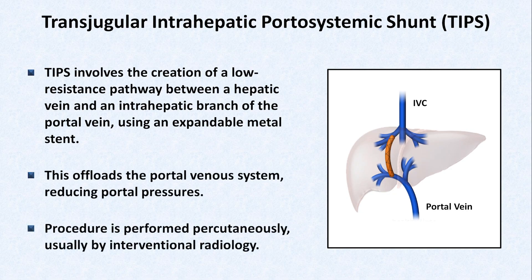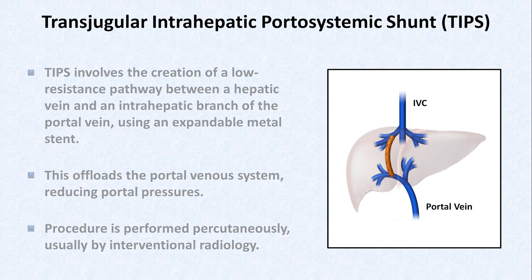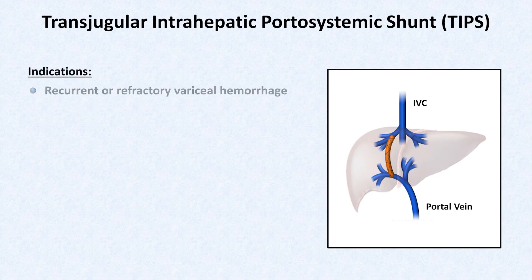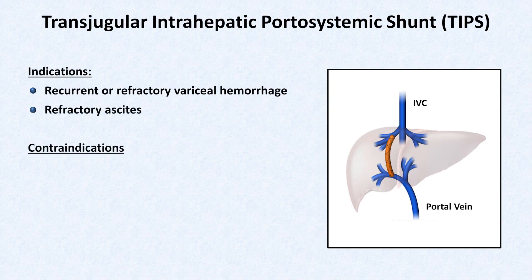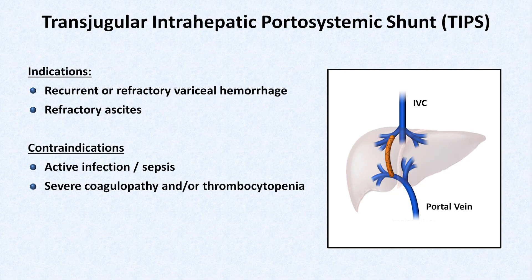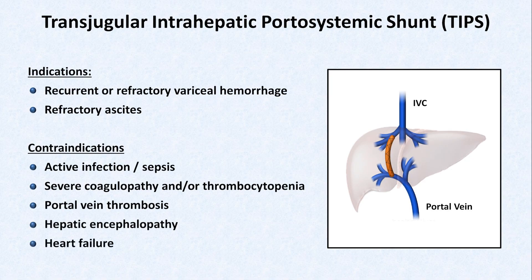The procedure is performed percutaneously, usually by interventional radiology. The two indications for TIPS are recurrent or refractory variceal hemorrhage, and refractory ascites. There are many contraindications for TIPS placement. An abbreviated list includes active infection or sepsis, severe coagulopathy and/or thrombocytopenia, portal vein thrombosis, hepatic encephalopathy, heart failure, or severe tricuspid regurgitation.